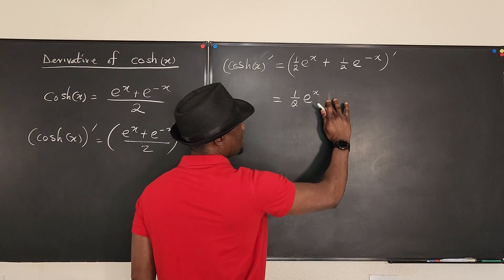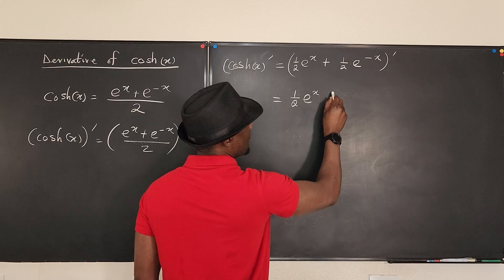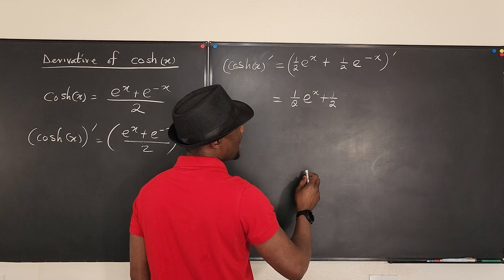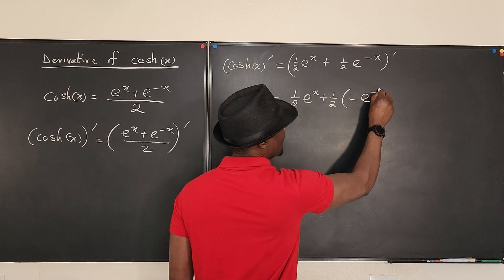If I differentiate the second term, the derivative is going to be one half. Let's put it this way: it's going to be plus one half times the derivative of e^(-x), which is negative e^(-x).